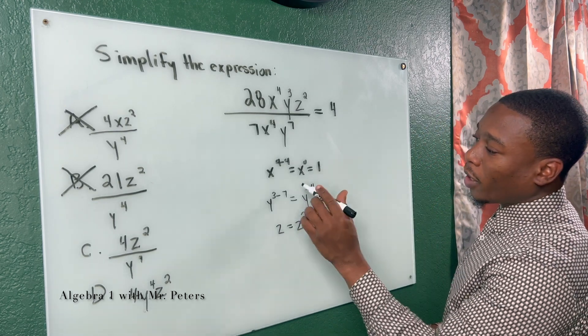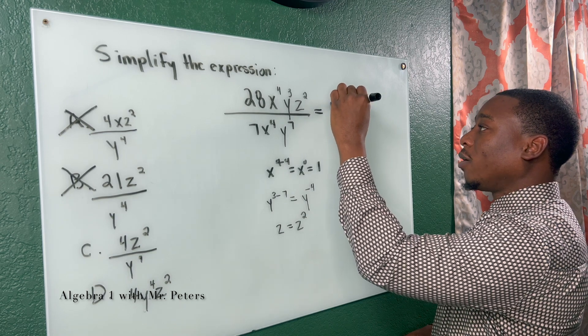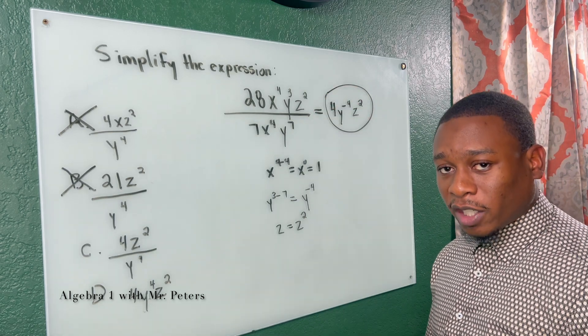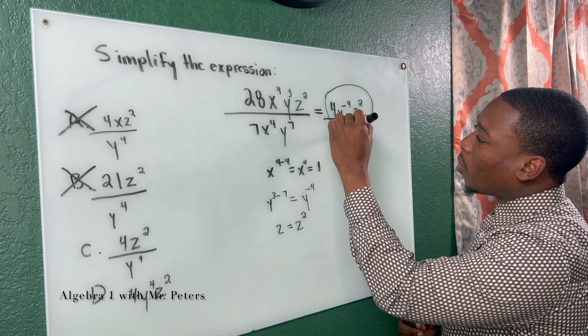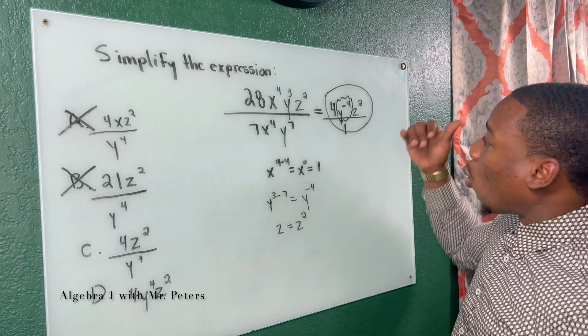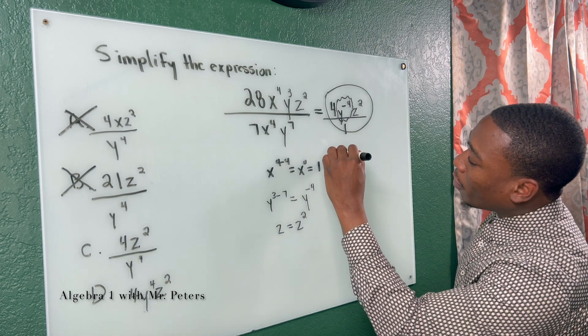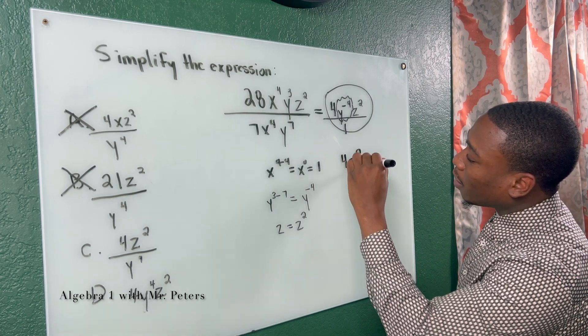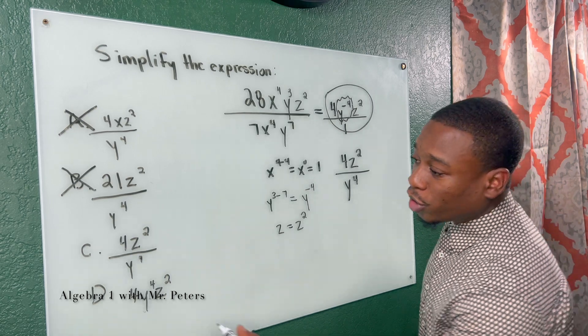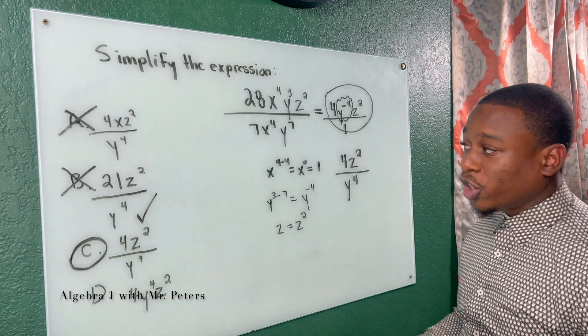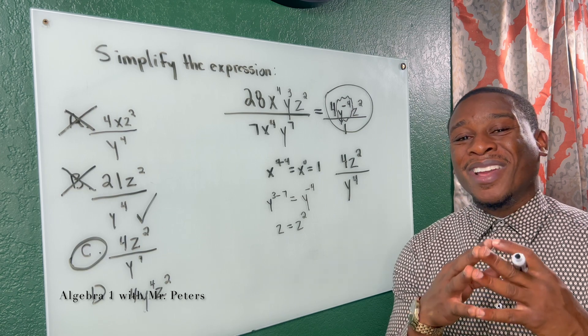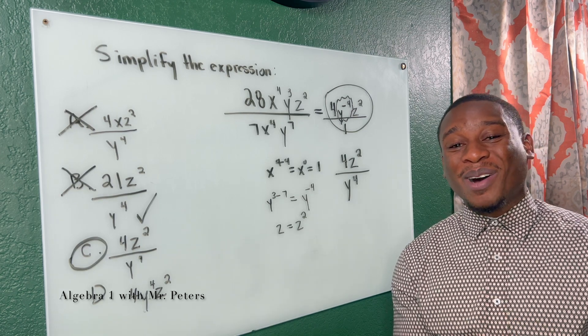So let's put all of this back together. What does this say? So we have 4, x is gone, y⁻⁴ times z². This is our answer here, but we know we cannot have negative exponents. Anytime we have a negative exponent, we turn the problem into a fraction and we take that term, that variable or that number, and we take its reciprocal. So now y⁴ is going to come to the bottom. And my final answer should be 4z² divided by y⁴. And if I'm not mistaken, this is answer choice C.